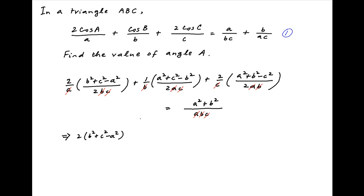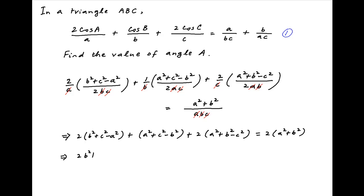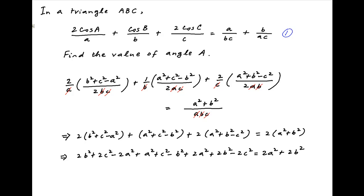Therefore this equation can be written as 2(b² + c² - a²) + (a² + c² - b²) + 2(a² + b² - c²) on the left hand side, and 2(a² + b²) on the right hand side. This simplifies to: first term 2b² + 2c² - 2a², second term a² + c² - b², third term 2a² + 2b² - 2c², all equal to 2a² + 2b².